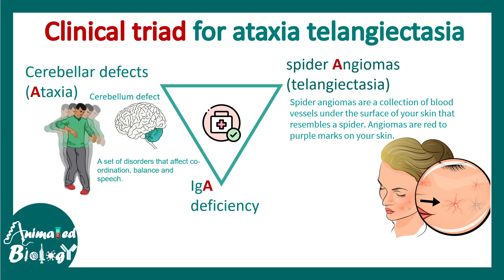Remember that the cerebellum is the particular portion essential for motor coordination. When there is a defect in the cerebellum, it most likely results in Ataxia. IgA is a secreted version of antibody and is important for many immune aspects, and that is also deficient in these patients.